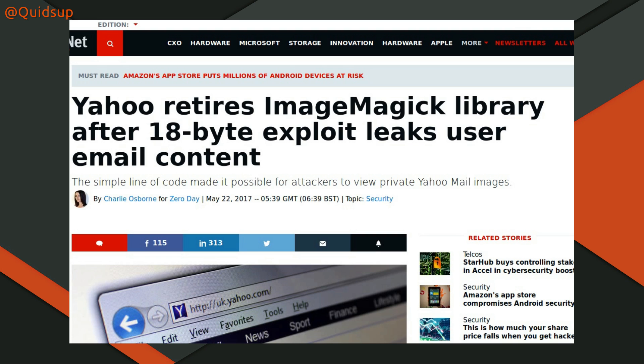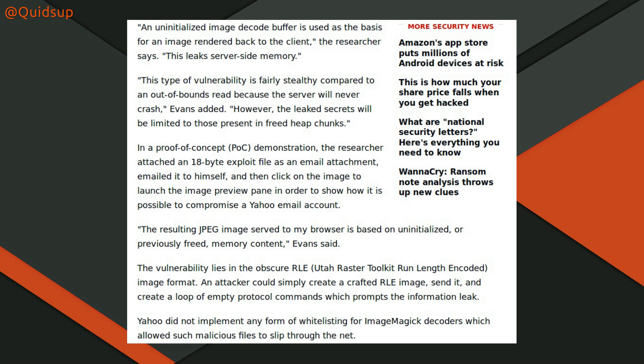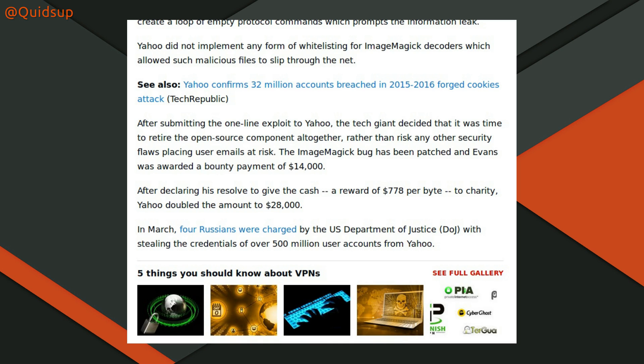Yahoo has retired the ImageMagick library after an 18-byte exploit leaked user email content. Security researcher Chris Evans demonstrated the exploit and released details of the security flaw to the public. Evans called it "Yahoo Bleed number one" — assuming there are going to be more, given that Yahoo's security is horrific. I've had my own account hacked into before; I was surprised one day to get a notification that my account had been logged into, even though I didn't know what the password was. This 18-byte exploit went out of bounds on memory and triggered the exploit, for which Yahoo awarded the researcher $14,000 — that's $778 per byte according to ZDNet. He passed the reward on to charity, and Yahoo doubled it to $28,000.